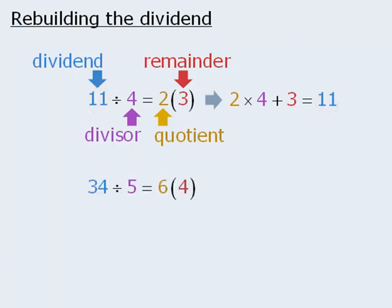Similarly, since 34 divided by 5 equals 6 with remainder 4, we can take the three values shown here and use them to create an equation that ends up equaling the dividend 34. We can write 6 times 5 plus 4 is equal to 34.